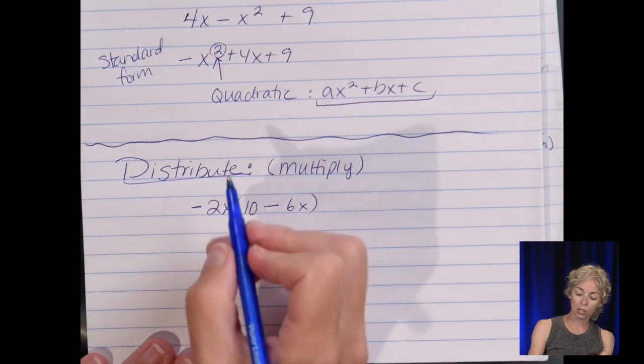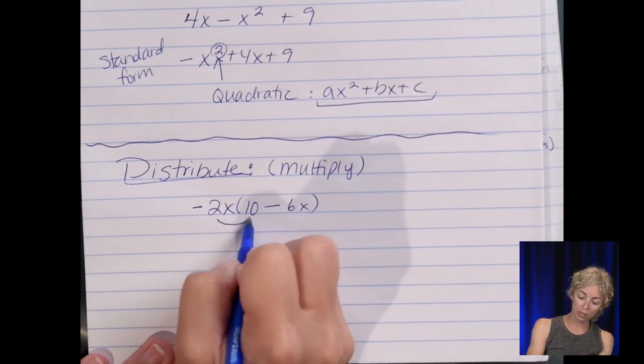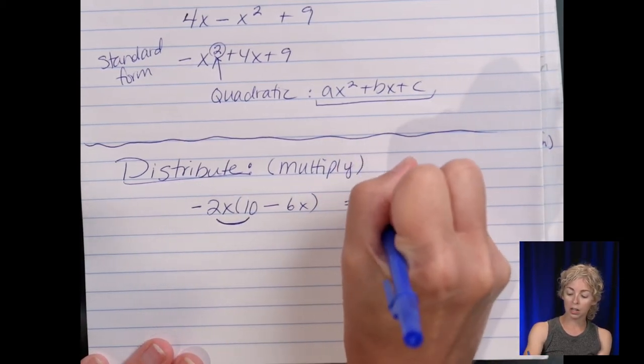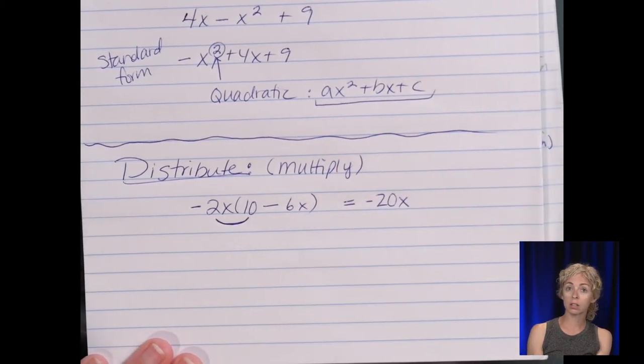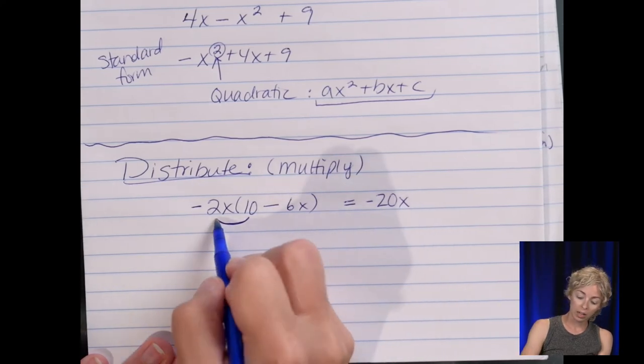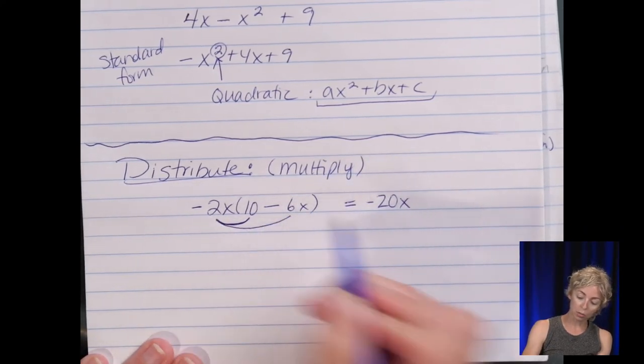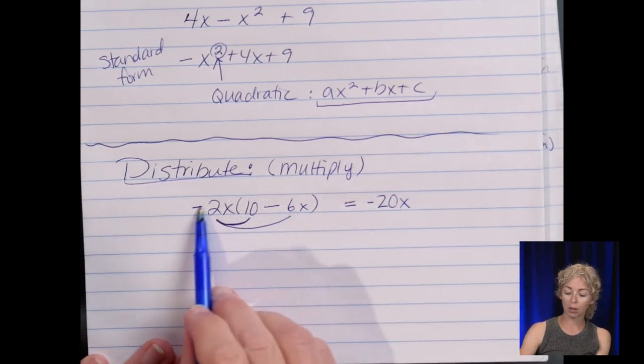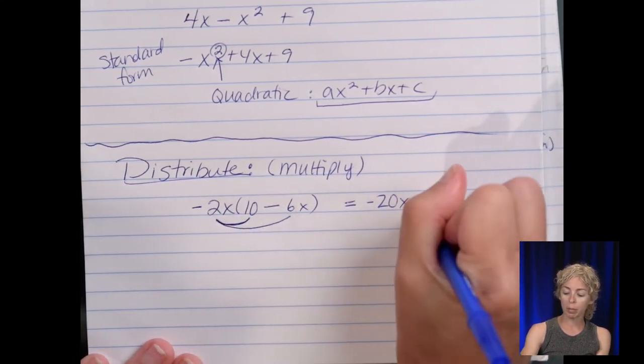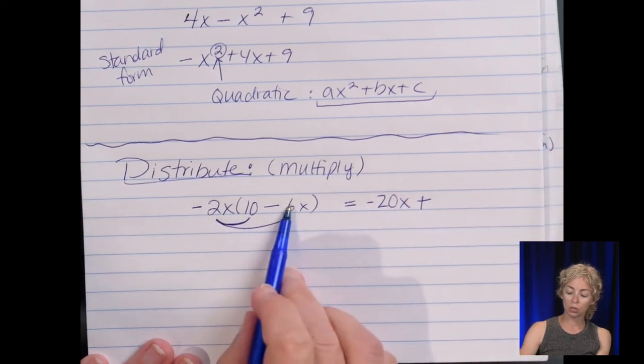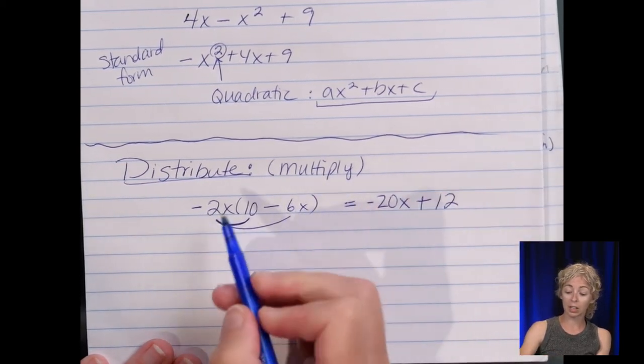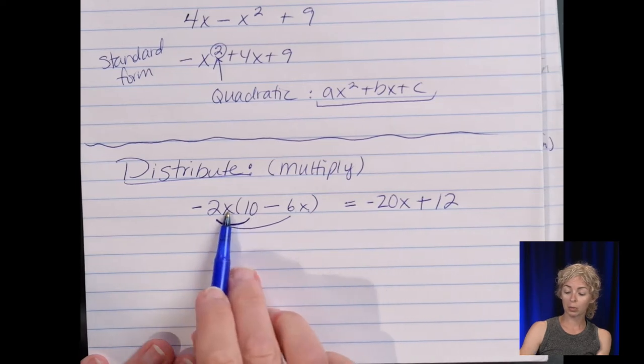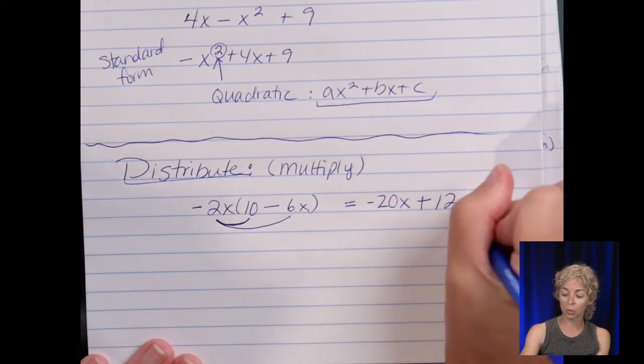So let's do negative two x times ten minus six x. So we distribute the negative two x times ten. So negative two x times ten is a negative twenty x. And then negative times negative here. Distribute this term to the second term of this binomial. Or this is a monomial. Negative times negative positive. Two times six, twelve. And x times x.